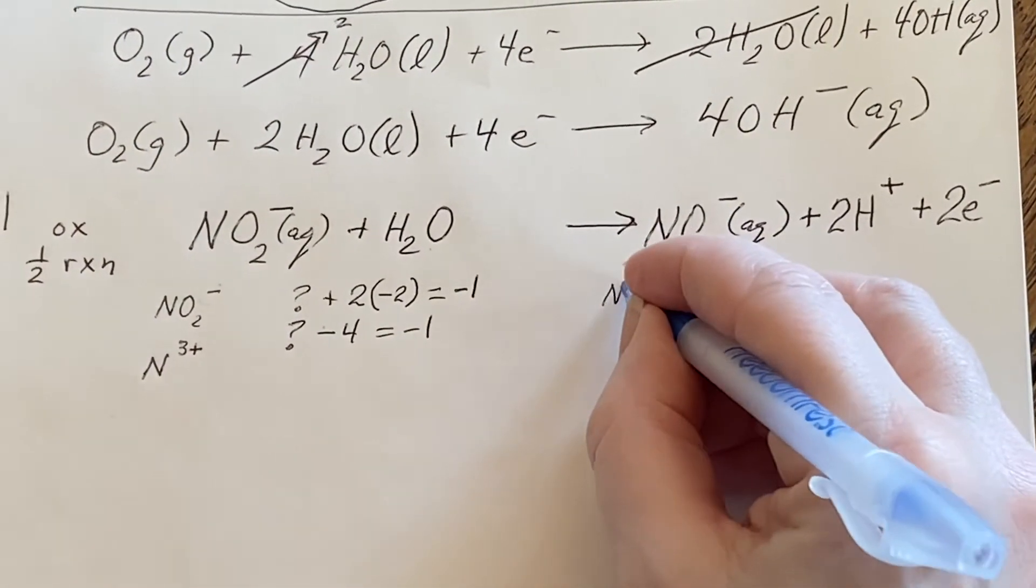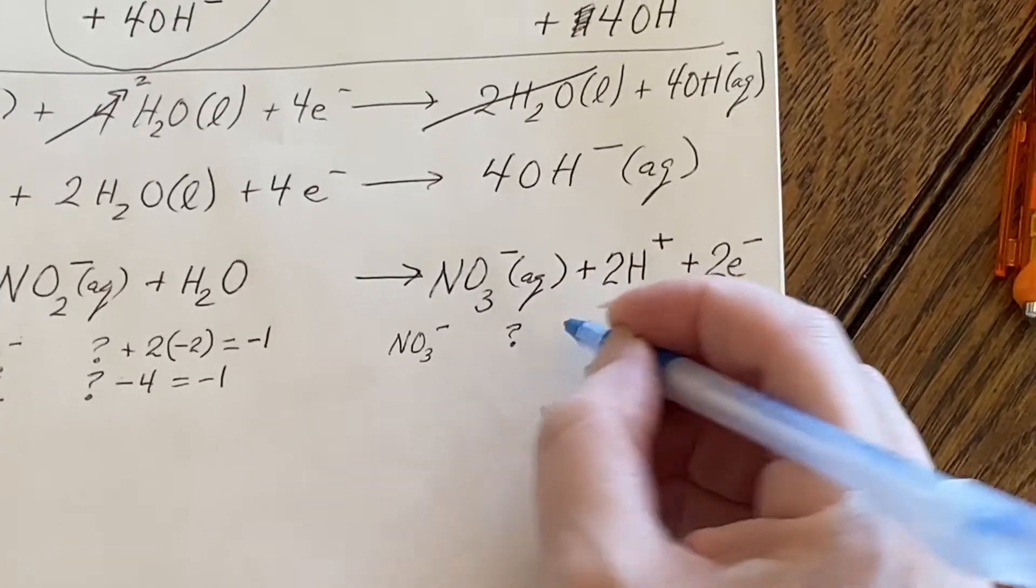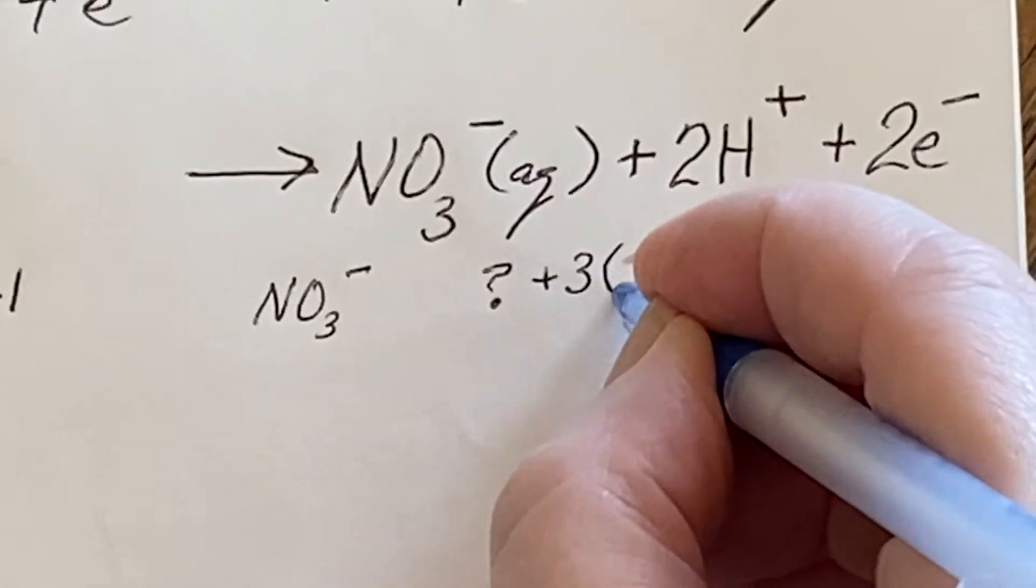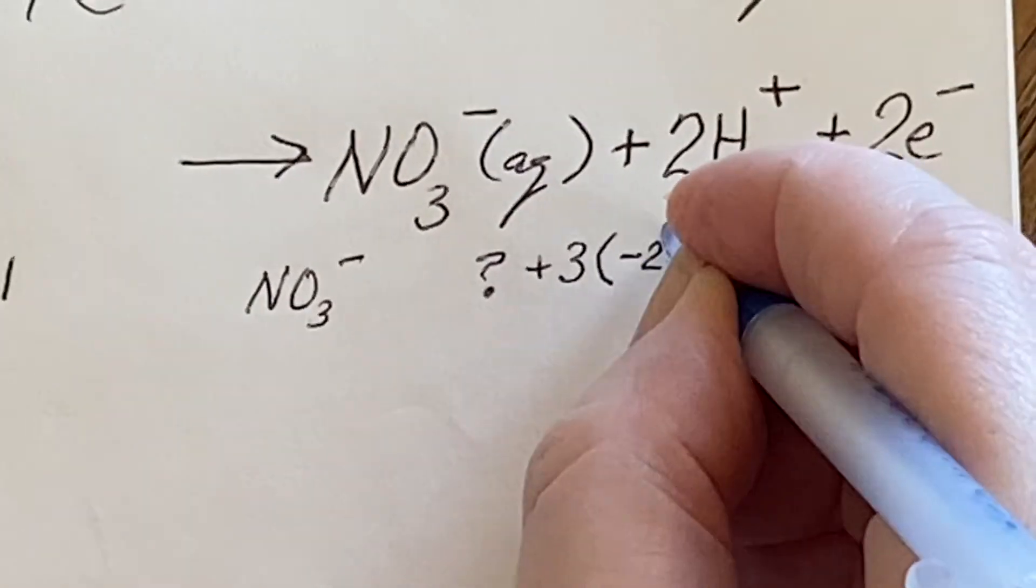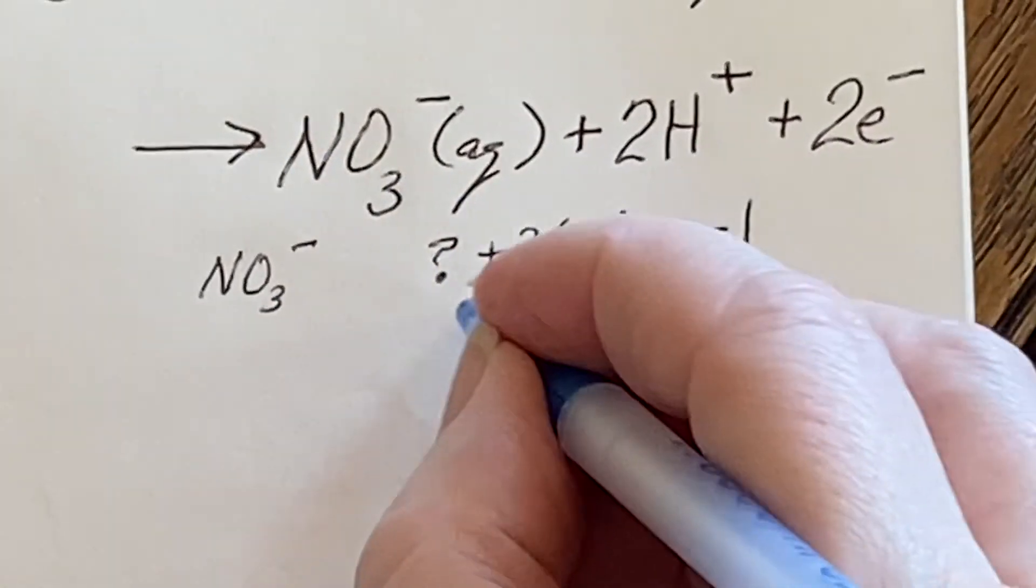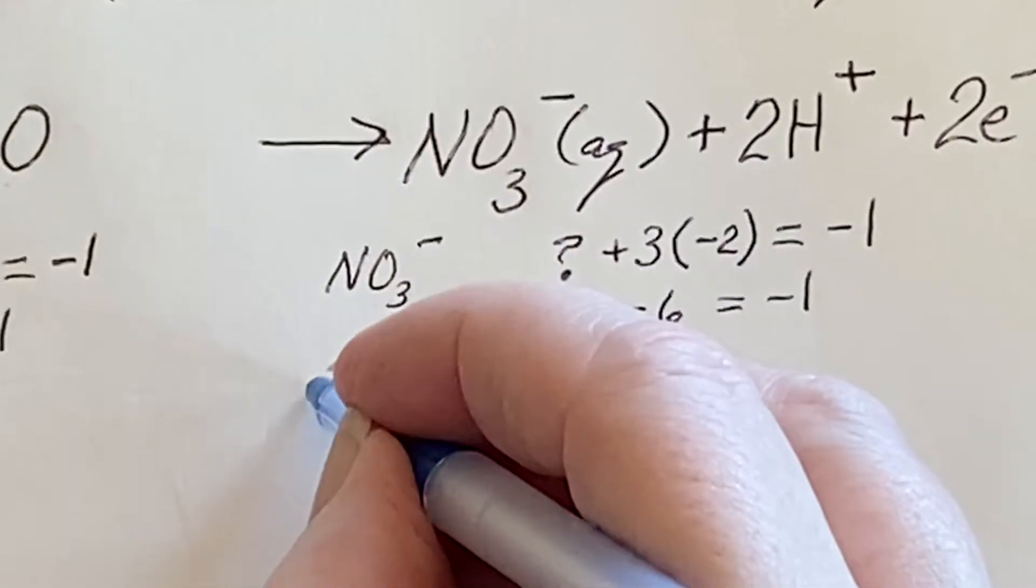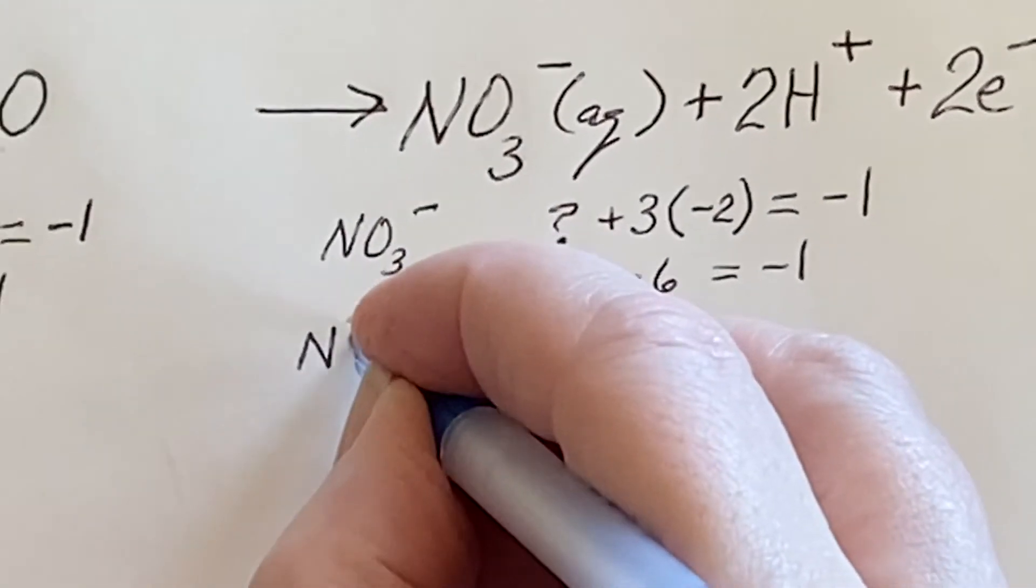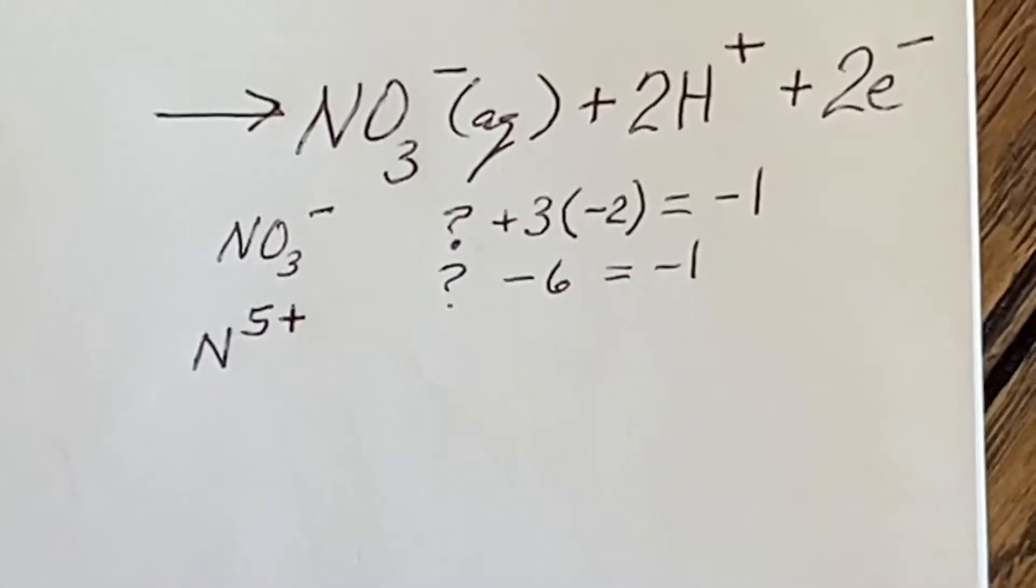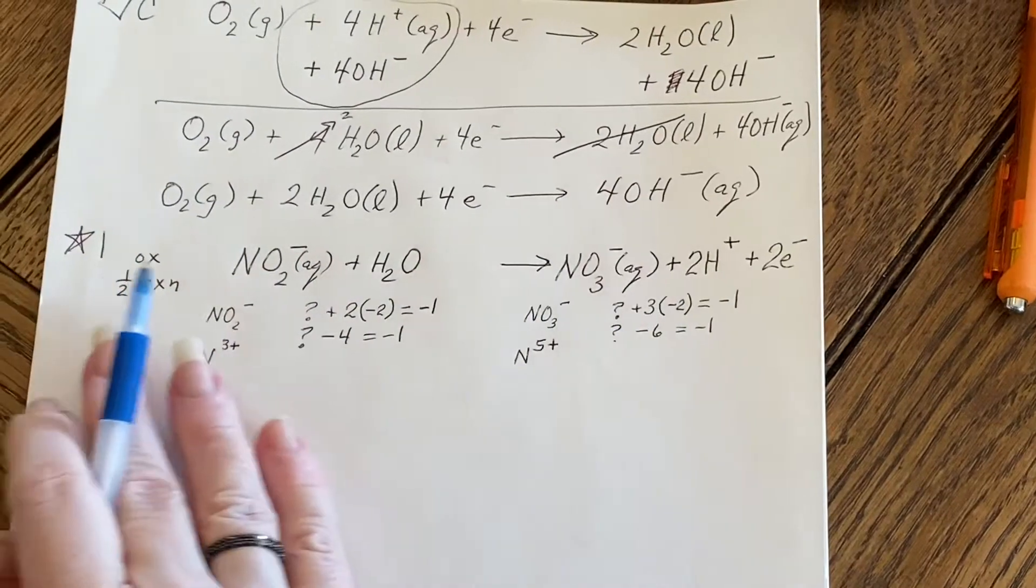What about over here? Well, we do the same thing. We say NO3-. We don't know what the oxidation state is for N, but I do know that there are three oxygens and they like to be negative twos. And I know that overall it should be a negative one. So I'm looking at question mark minus six equals negative one. And I realized that must be that the nitrogen is in a plus five oxidation state. It went up. So that's an oxidation. Okay. It all fits together.